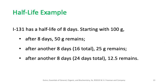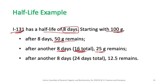For example, Iodine-131 has a half-life of 8 days. Starting with 100 grams: after 8 days, 50 g remain; after 16 days, 25 g remain; after 24 days, 12.5 g remain. Each half-life halves the amount of the original sample.